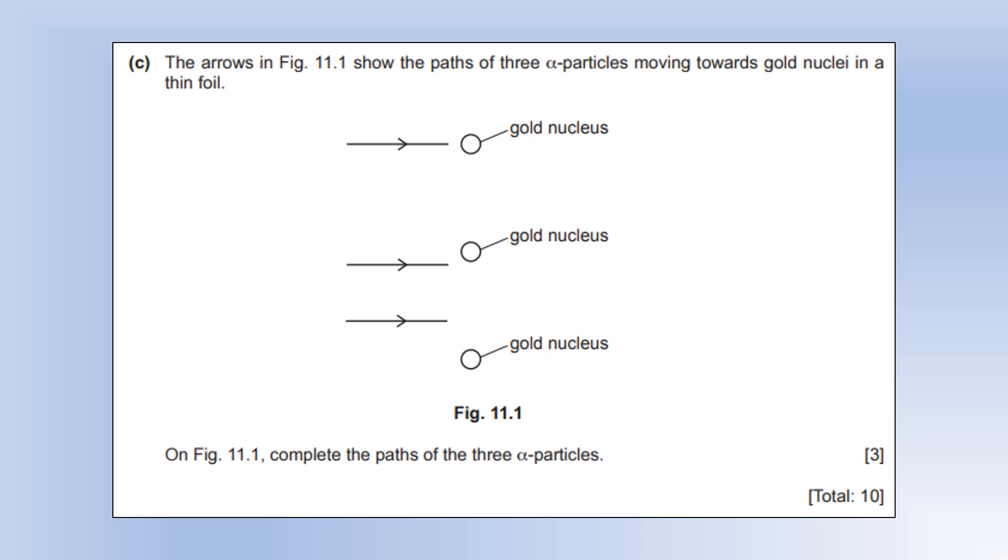Final question. The arrows show the path of three alpha particles moving towards gold nuclei in a thin foil. Complete the path of the three particles. The bottom one has missed the nucleus by quite a long way, so it's going to go pretty much undeflected. The next one has travelled closer to the gold nucleus, and it's going to be repelled by it, because they're both positively charged. So, we're going to get this type of path. Whereas the top one has had a near head-on collision, so it's going to get bounced back in the direction that it came from. And that completes this exam paper.